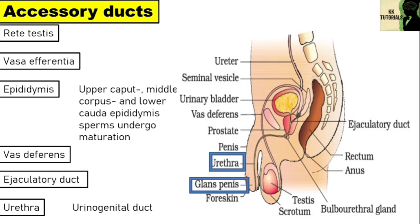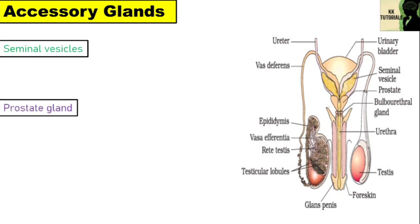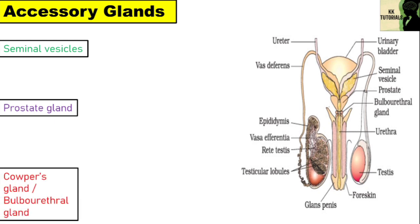All the accessory ducts except the urethra are present in pairs. The male accessory glands are the seminal vesicles, prostate gland, and Cowper's gland, also called the bulbourethral gland.